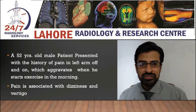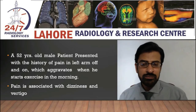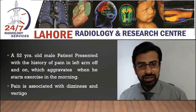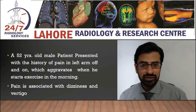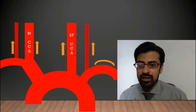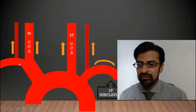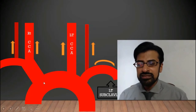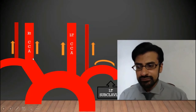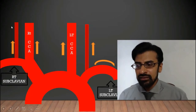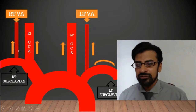Before discussing the Doppler study in this patient, let's have a look at subclavian steal phenomenon so that you can better understand the Doppler findings. The left subclavian artery directly arises from the arch of the aorta, and the right subclavian artery arises from the brachiocephalic trunk, which in turn arises from the arch of the aorta. The vertebral artery arises from the first part of the subclavian artery.